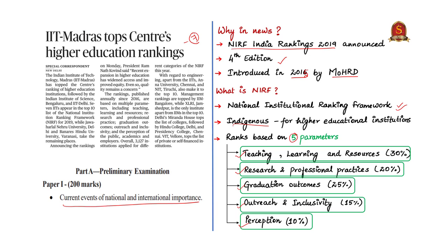Teaching, learning and resources has the highest weightage among all five parameters at 30%. Next comes graduation outcomes with 25% weightage. Research and professional practices hold 20% weightage. Outreach and inclusivity has 15% weightage. Finally, perception has the least weightage of 10%, and it includes both peer and public perception.